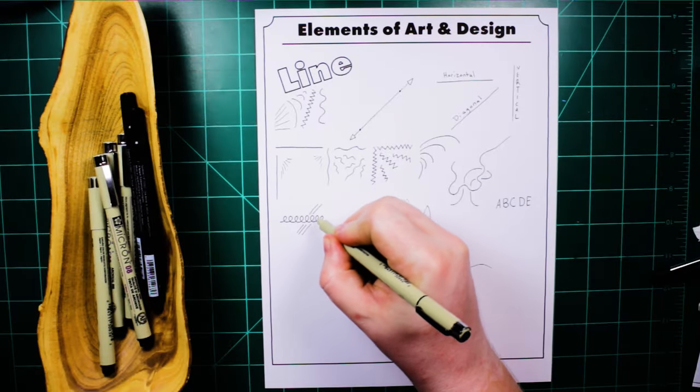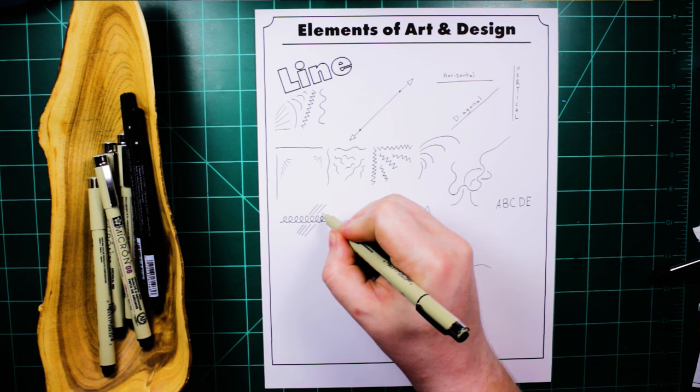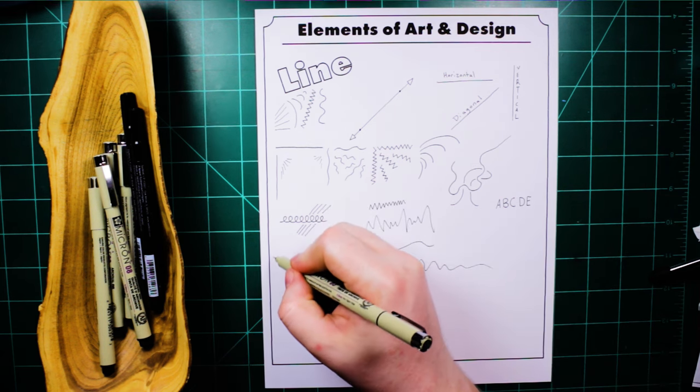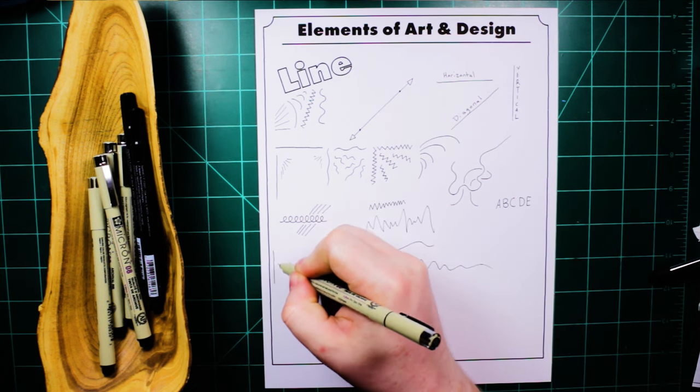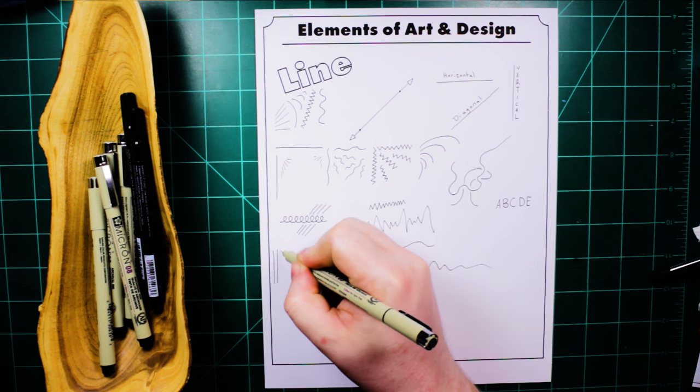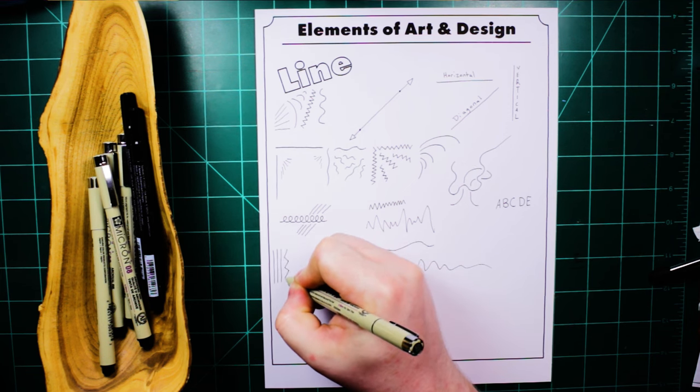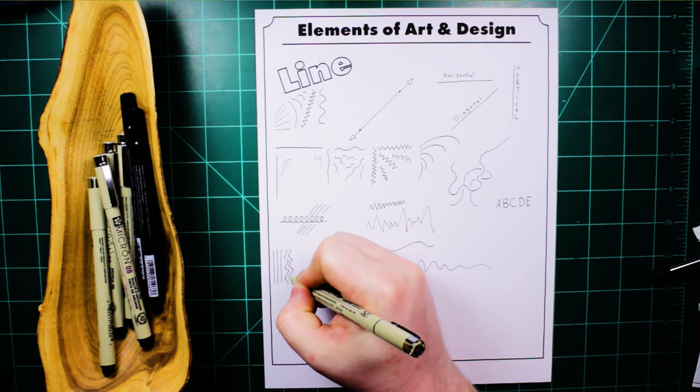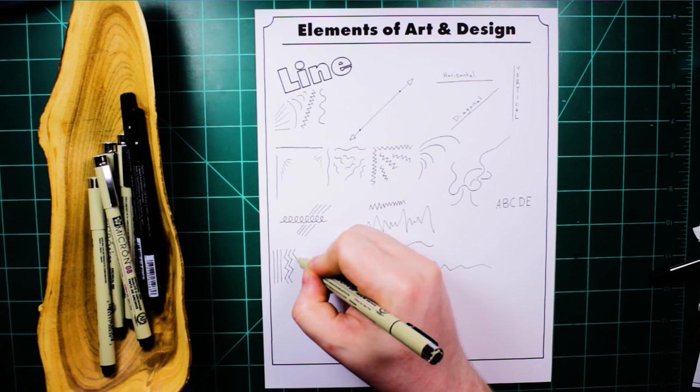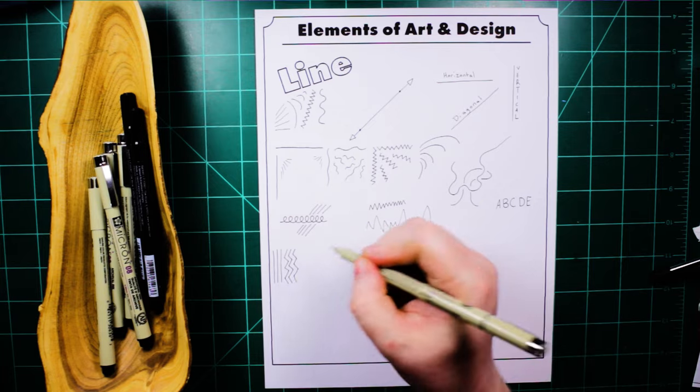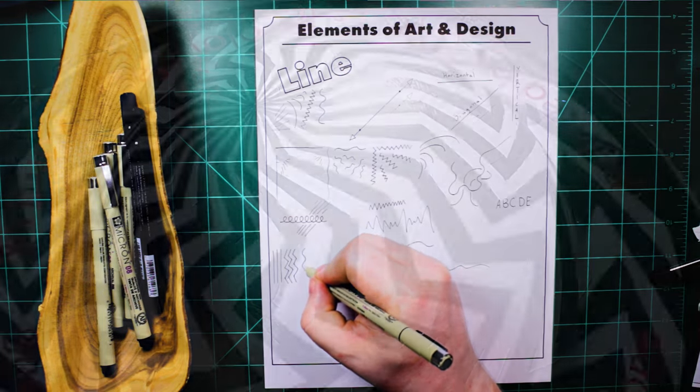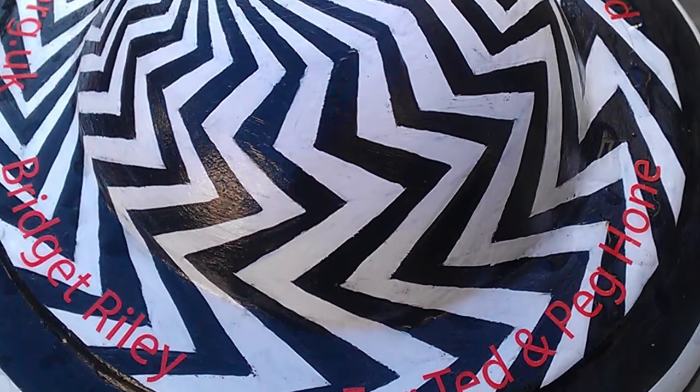Another way lines can be used together is to make them parallel. In math class, there are very strict rules about parallel lines always being straight, but in art, we have the flexibility to say that wavy or zigzag lines can also be parallel. Parallel just means that they go the same direction and follow along each other's path, such as the zigzag lines on top of this pole painted by Bridget Riley.